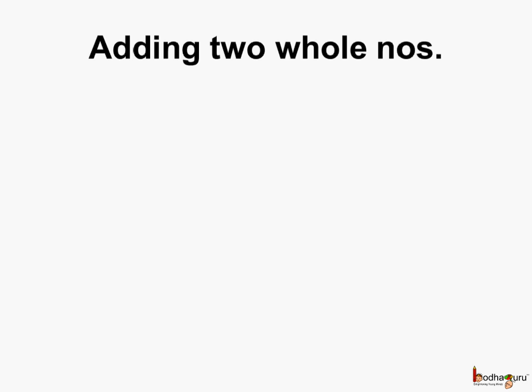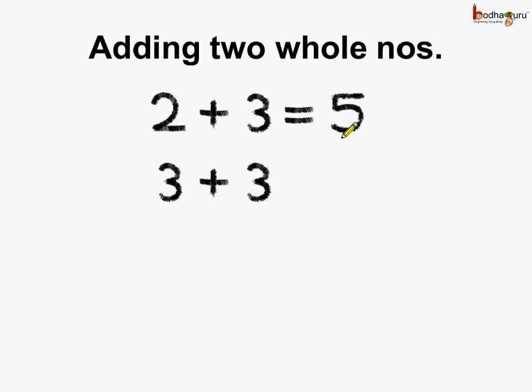Now let us add two whole numbers and see what we get. 2 plus 3 is equal to 5. And what is 5? 5 is a whole number. Let us try another example. 3 plus 3, what is it equal to? It is equal to 6. Here 6 is a whole number.